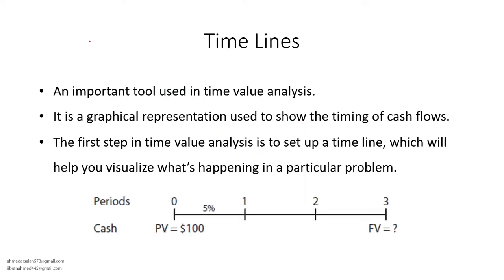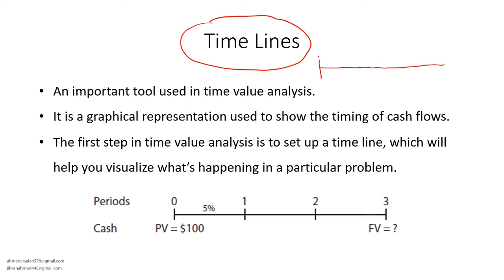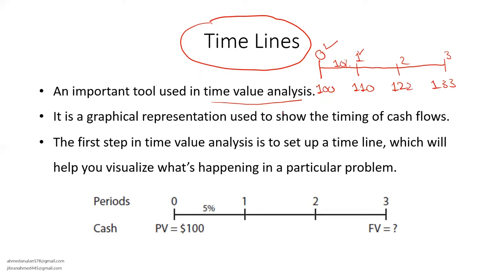For calculating time value of money, the first method we use is timelines. Timelines are basically a line on which we plot different periods — say 0, 1, 2, and 3. We check the value of money at different periods: say it is $100 here at 10%, so it will be $110 here, then $122, then $133. So we are checking the time value of money at different points in time on this timeline. It is an important tool used in time value analysis and is a graphical representation used to show the timing of cash flows.